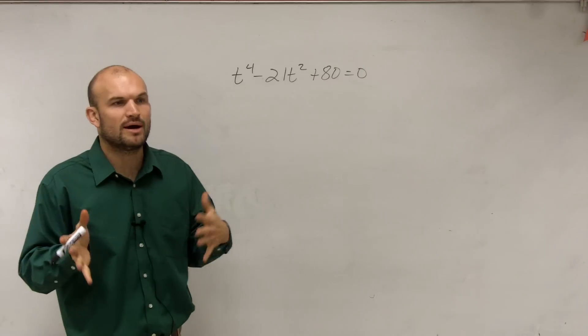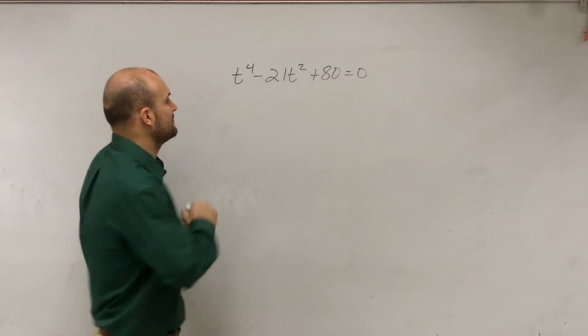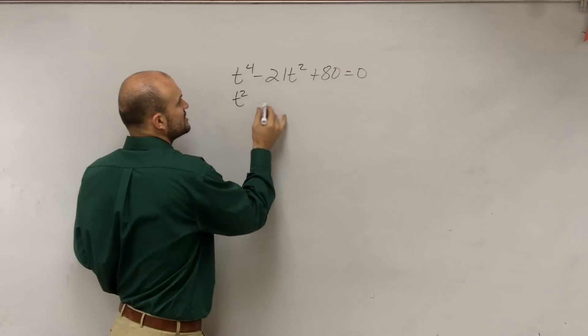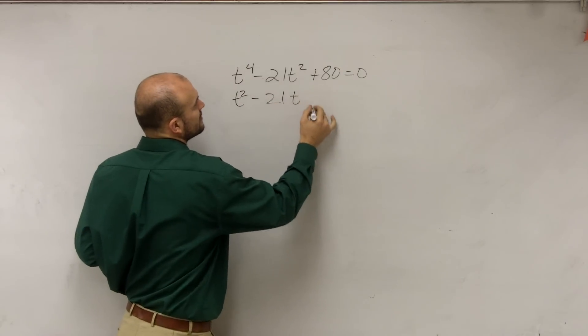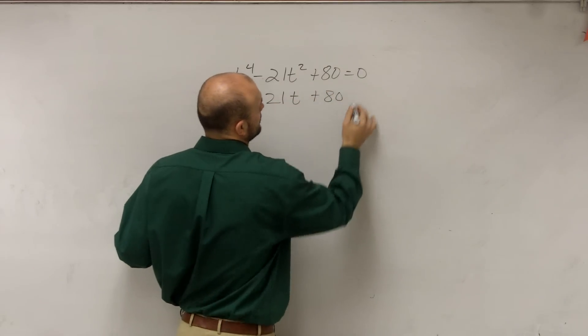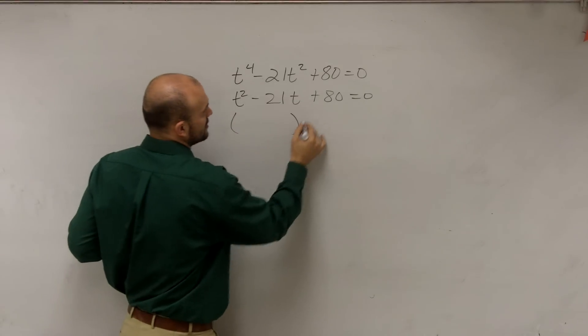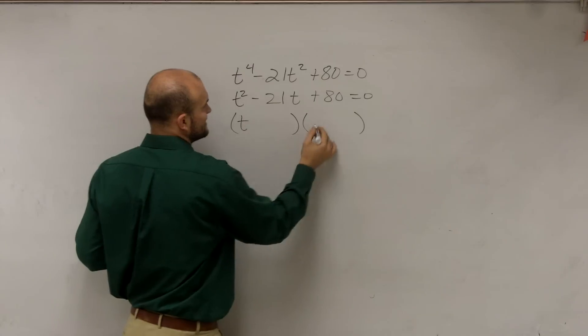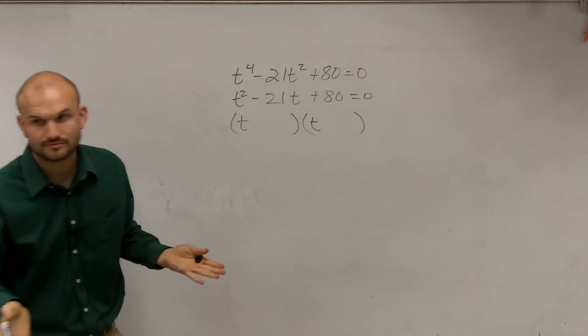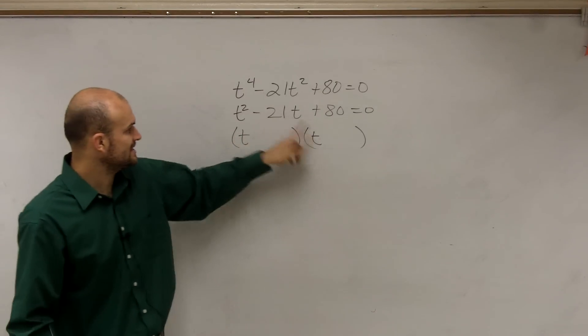But let's just go back and kind of worry about what if it was not to the fourth power. What if this was t squared minus 21t plus 80 equaled 0? So if I needed to factor this, we'd know that my first two terms would have to be t times t, because t times t would give me t squared.